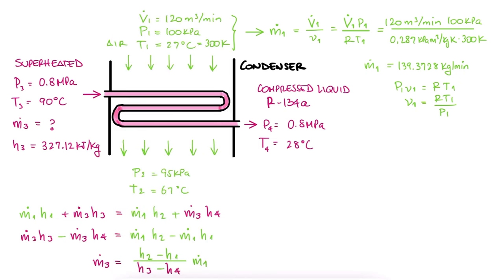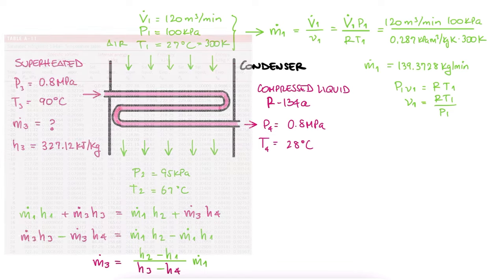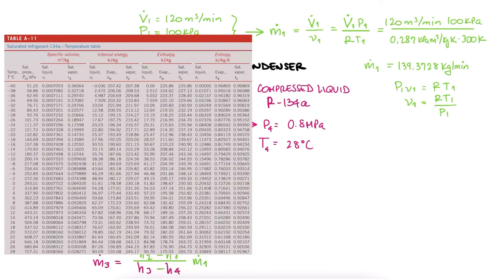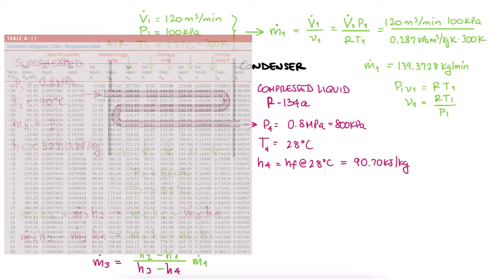And as I just explained, for H4 at the exit, we probably have a liquid. We go to the saturated tables by temperature to look up 28 degrees Celsius, see that the saturation pressure is 727.31 kPa, which means that at 800 kPa we do have a liquid, and therefore we use the approximation that the specific enthalpy is that of a saturated liquid at 28 degrees Celsius, and that's H4.